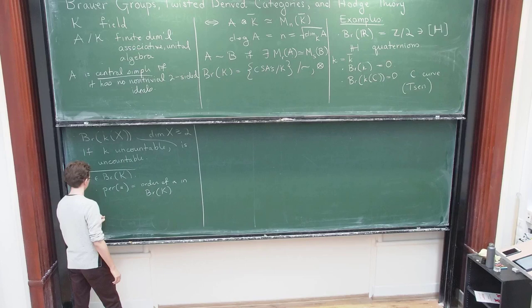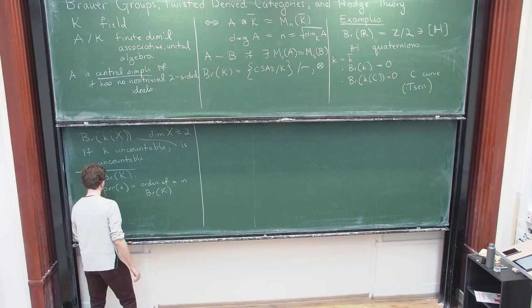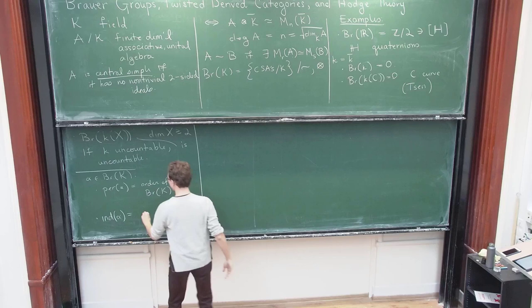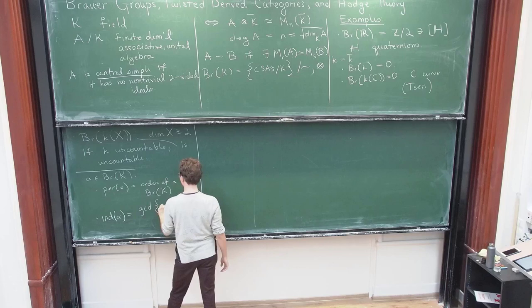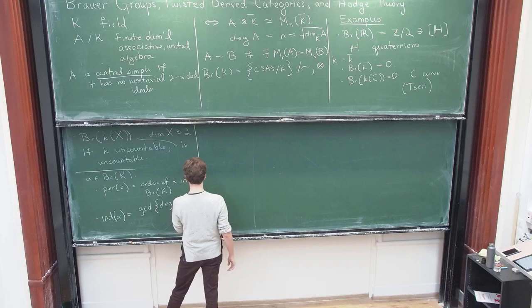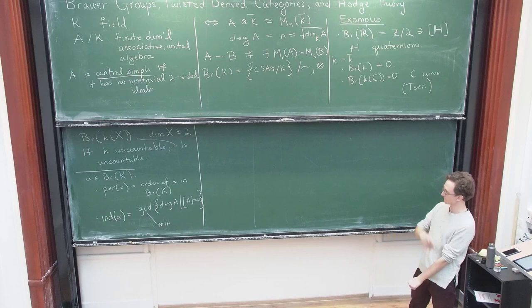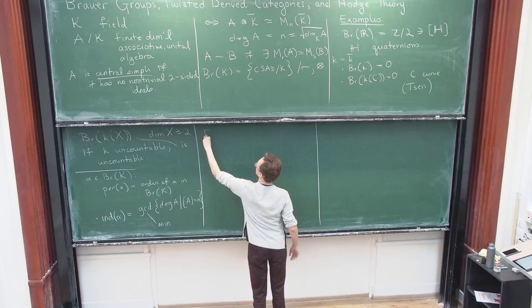And on the other hand, you can consider, so this is just a sort of naive group theoretic invariant. On the other hand, you can consider what I think is the more interesting invariant, which is the index. And the index just tells you how large a central simple algebra is that you need to represent alpha. So you take, one way to say it is you take the GCD of the degree of any central simple algebra of class alpha. But in fact, the theory of central simple algebras tells you that this is actually a minimum. There's a unique isomorphism class of minimal representative.